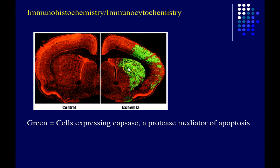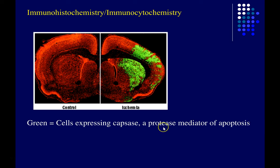On the right it shows a rat that had an intentional stroke — they blocked off blood flow to part of its brain, just like in a stroke in humans. The cells in green here are expressing an enzyme called caspase — a protease mediator of apoptosis. It's an enzyme that breaks down other proteins when cells kill themselves on purpose — intentionally commit suicide. That's what's going on here: these cells are in the process of dying.